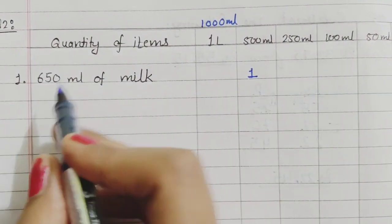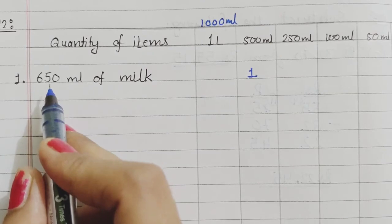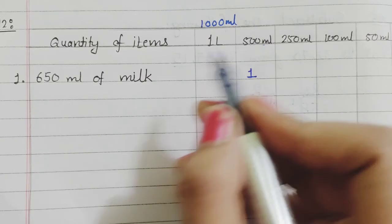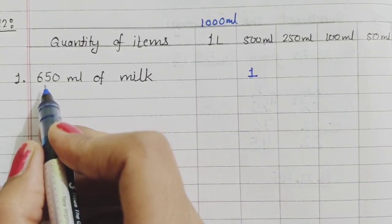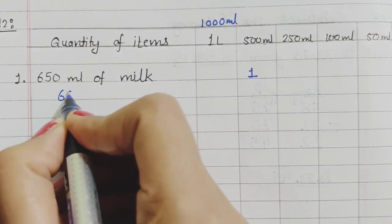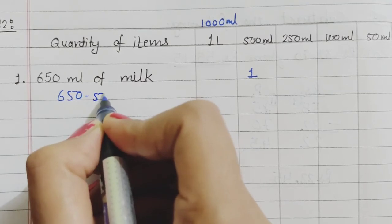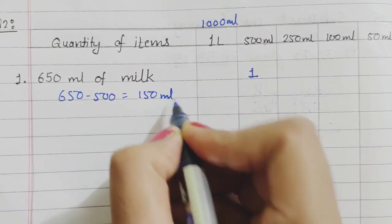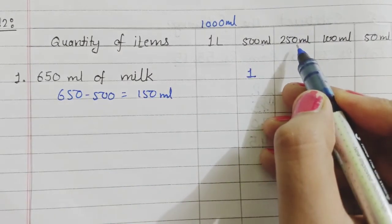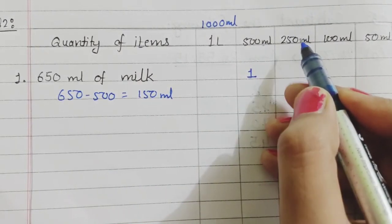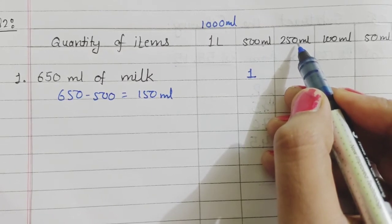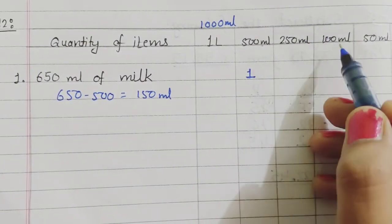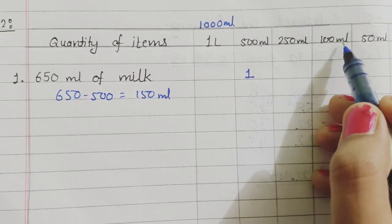Now, we have used this container. How much ml will be left? We will find out this: 650 ml minus 500 ml equals 150 ml. Now, move to the next one. Will 150 ml fit in 250 ml? It won't fill up because this is more than 150, so we cannot use this vessel.